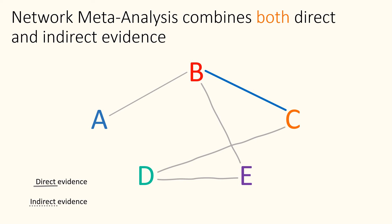When there is both direct and indirect evidence for a comparison, network meta-analysis pools both of these. Here, the direct B versus C evidence is combined with the indirect evidence shown in yellow.